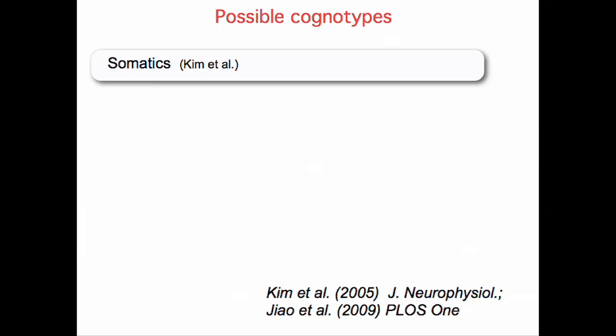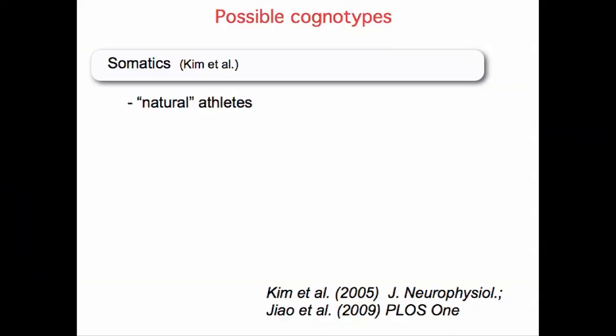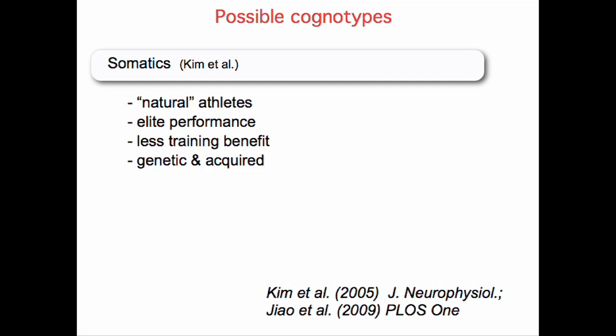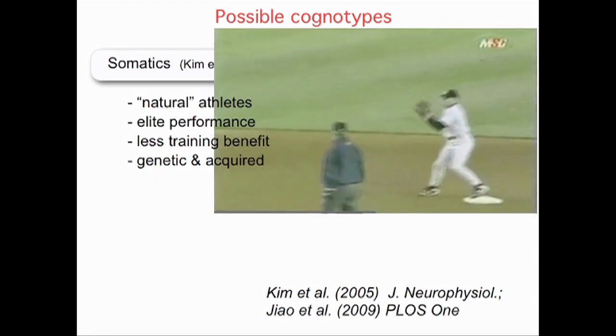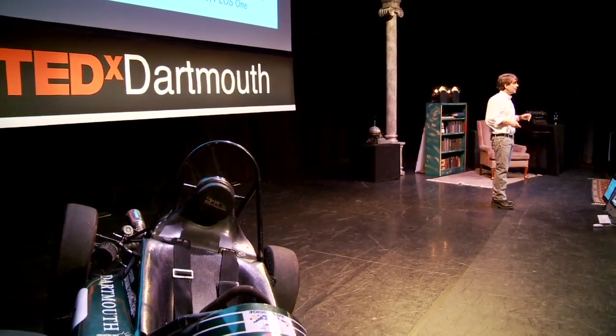Another example: somatics. These are people who have unusual brain control over their motor functions. They often become natural athletes from young ages and rise to the tops of their fields. Interestingly, training helps them less than it helps most people — when they get training they do better, but they already knew what to do. They knew how to throw from second to first; it's a natural. One side effect of this is that when they lose that ability, as one second baseman sadly did, they can't get it back — no amount of training will bring it back. It was innate, genetically built in. That's another cognotype.